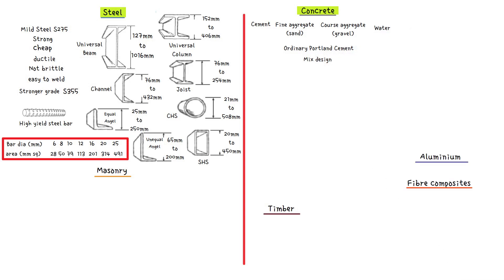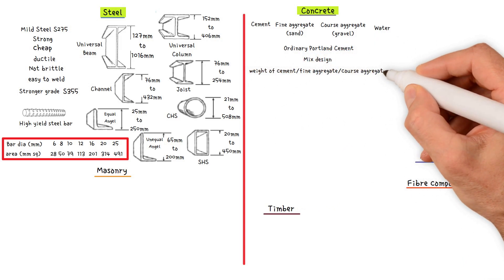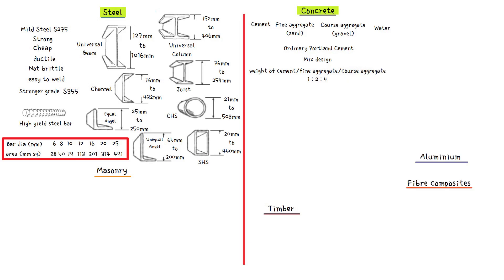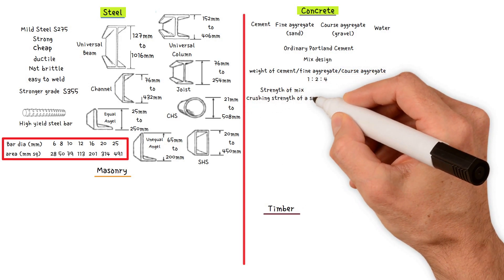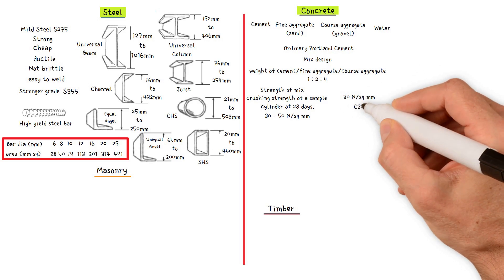A general purpose mix suitable for small foundations is obtained if the ratio by weight of cement, fine aggregate and coarse aggregate is 1:2:4. For more important structural work, the strength of a mix is defined in terms of the crushing strength of a sample cylinder at 28 days. Typical crushing strengths vary from 30 to 50 newton per millimetre squared. A concrete mix with a crushing strength of 30 newton per millimetre squared is referred to as class C-30 concrete.